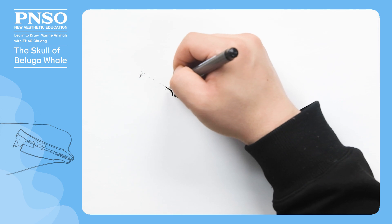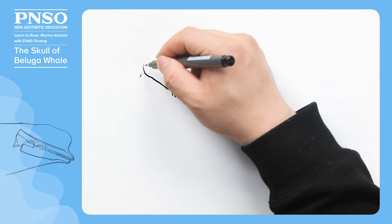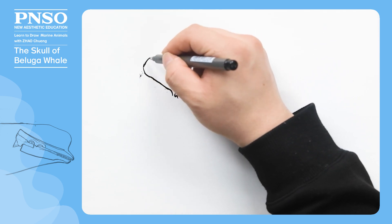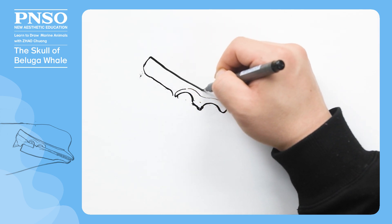Behind the eyes, the frontal bone extends backward and connects to the bones at the back of the skull, which is narrow at the top and wide at the bottom.